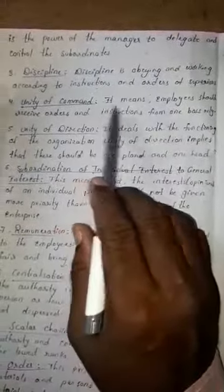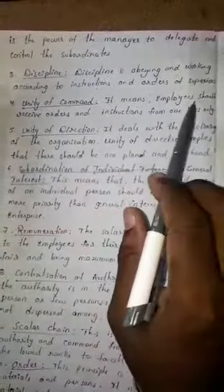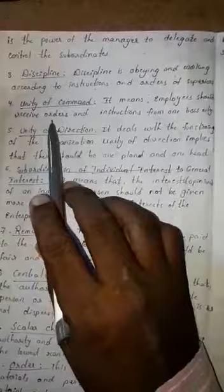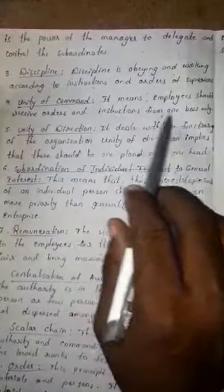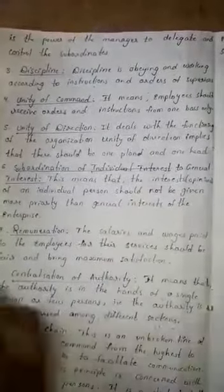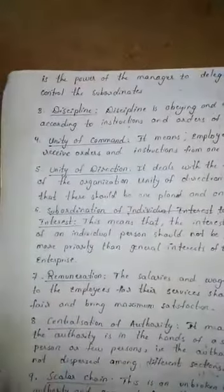Unity of Command means employees should receive orders and instructions from one boss only — one boss, one worker.